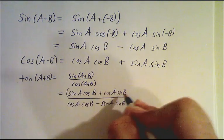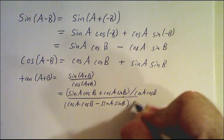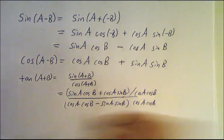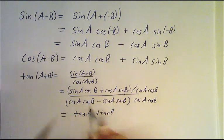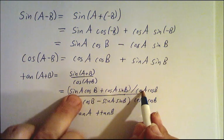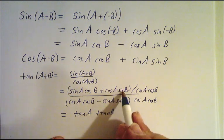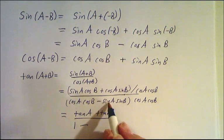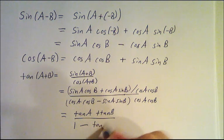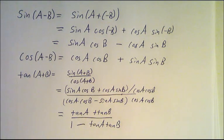We just divide the top and bottom by cos(a)cos(b). The top becomes tan(a) + tan(b), since sin(a)/cos(a) = tan(a) and cos(b)/cos(b) = 1. Likewise the second term gives tan(b), and the bottom gives 1 - tan(a)tan(b). So you get the tangent addition formula. I won't bother doing tan(a-b), secant, or cosecant — you can do those yourself.